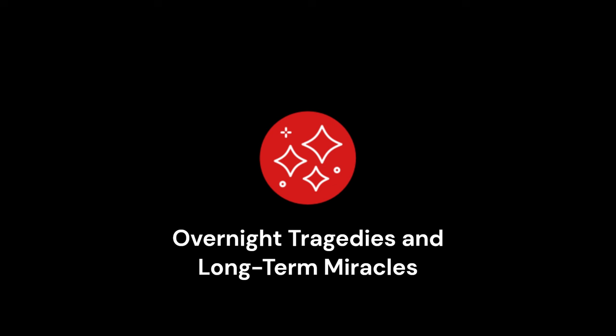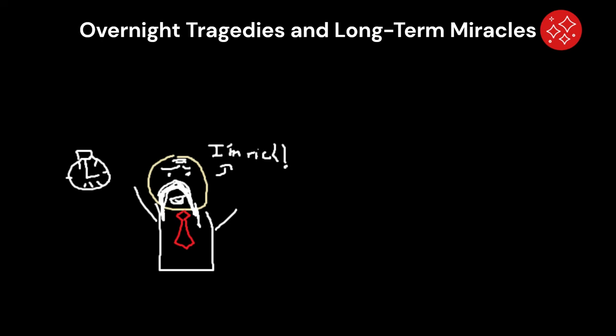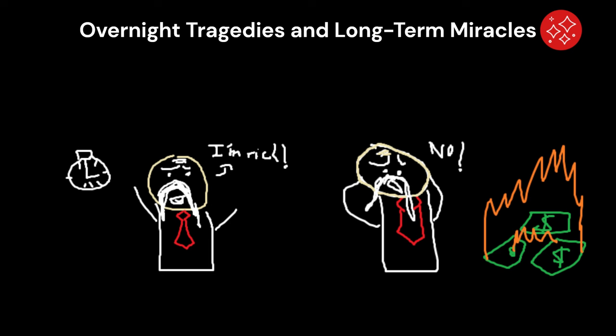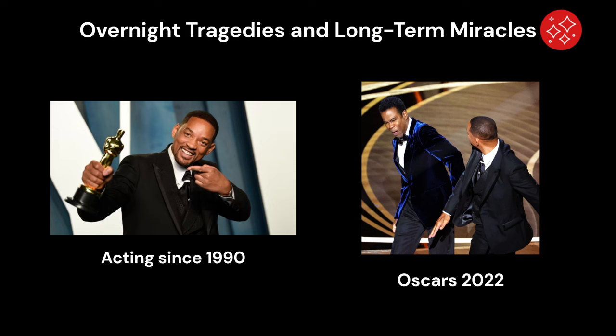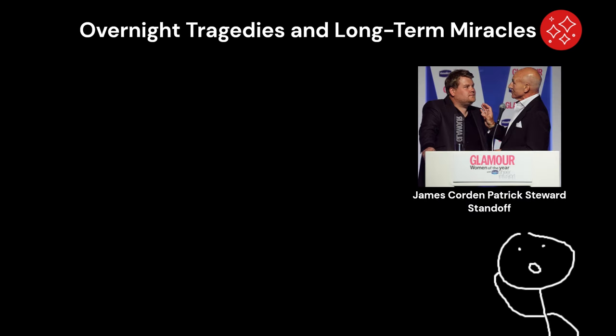Overnight tragedies and long-term miracles. Good things take time but bad things can happen in an instant. Will Smith took years to build his career and reputation just to have them taken away at the 2022 Oscars. You can find countless other examples like this.